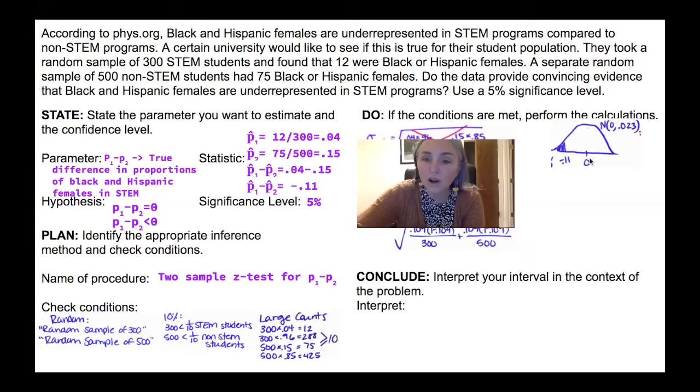And so what we need to be able to do here is we need to be able to make a normal curve with a normal curve. We need a mean and we need a standard deviation. So on my normal curve, I'm using zero because I'm saying, I think it's zero.